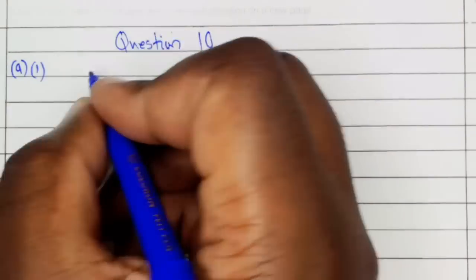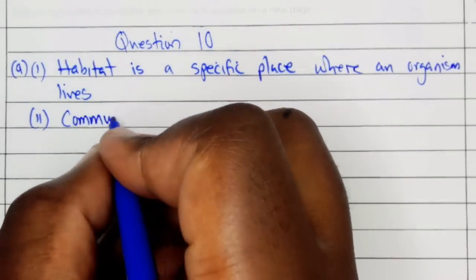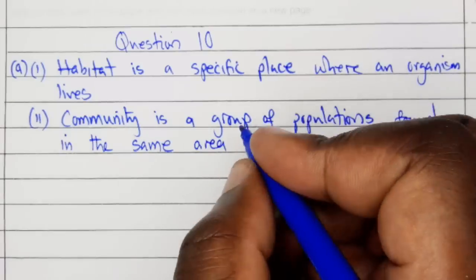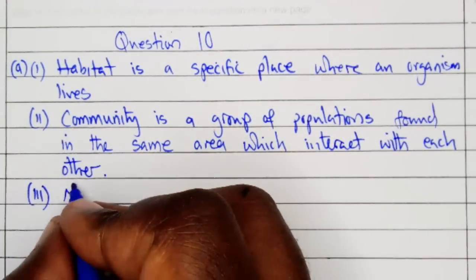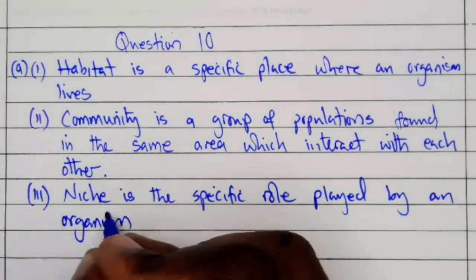Solutions to question 10. A1: Habitat is a specific place where an organism lives. A2: Community is a group of populations found in the same area which interact with each other. A3: Niche is a specific role played by an organism in an ecosystem.